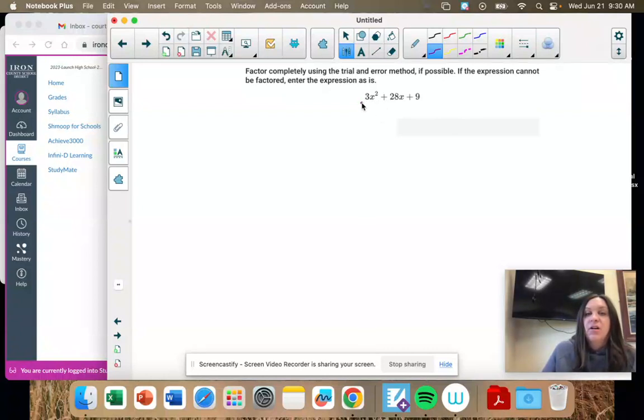So first thing, look for greatest common factor. 3 and 9 both divide by 3, but 28 does not. So there's not a greatest common factor.